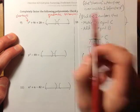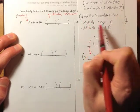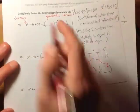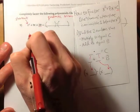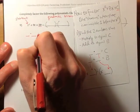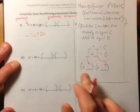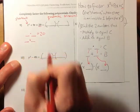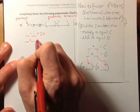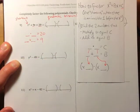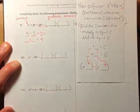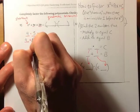In order to use the shortcut, we need to find two numbers that multiply and equal C — in this case the last number — so C is 20. We need two numbers that multiply and equal 20: what times what equals 20. And then these same two numbers need to add to equal B. What plus what equals B? In this case it's 9. You might be able to just see the two numbers: 4 and 5 work. 4 times 5 equals 20, and 4 plus 5 equals 9.